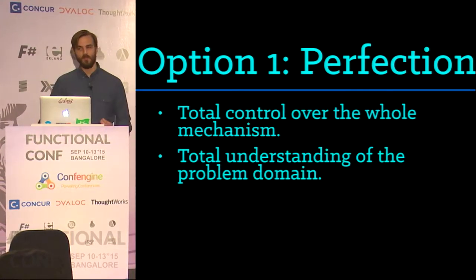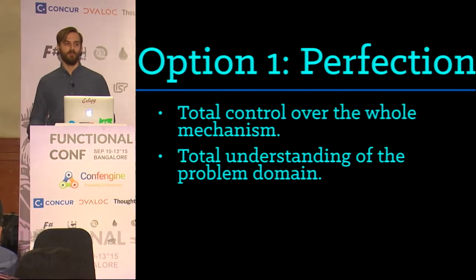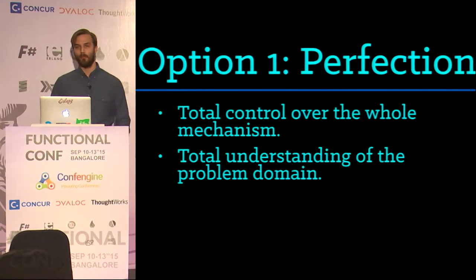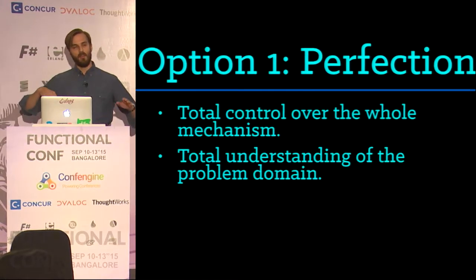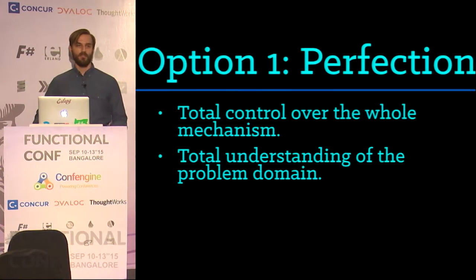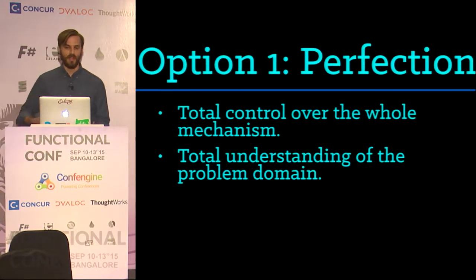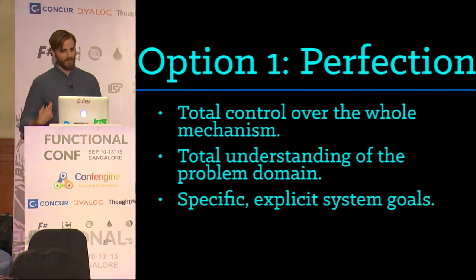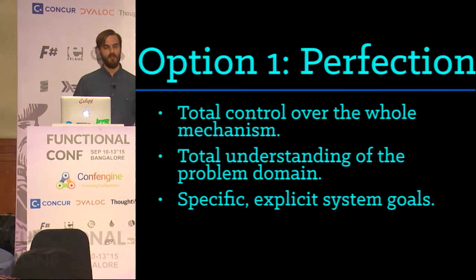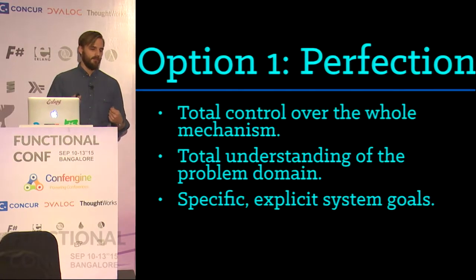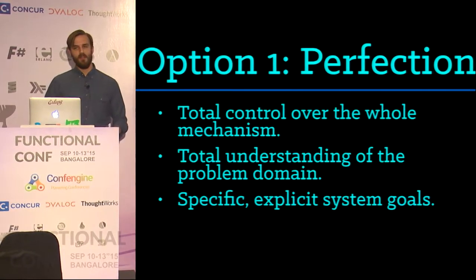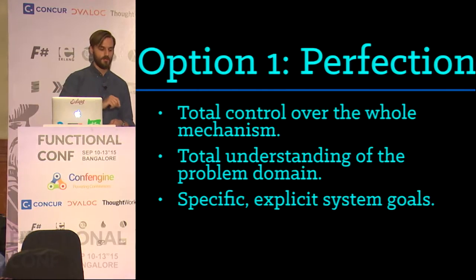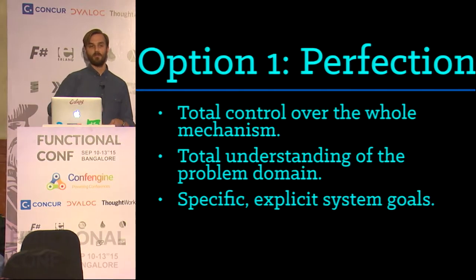You have to have a total understanding of the problem domain — that's a problem for general software development. When you're doing orbital dynamics and launching a space shuttle, you do have total understanding of the problem domain, so the software group could say, well, I'm going to fire this actuator — what is the load tolerance? They could go get it, experiment with it, and make models. You need to have specific and explicit system goals. Space shuttle, nuclear power plant, flight system, pacemaker — all of these have a very specific job, and that allows you to decide exactly what needs to be done and bake that into your models.